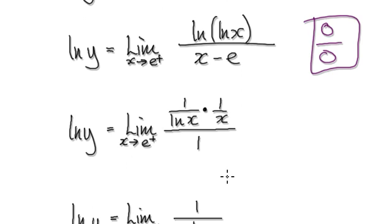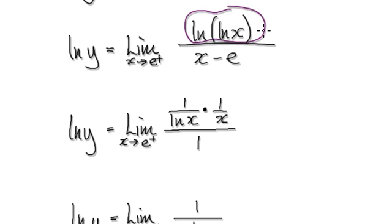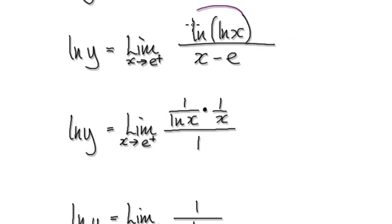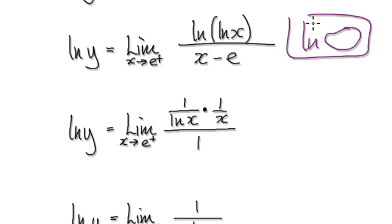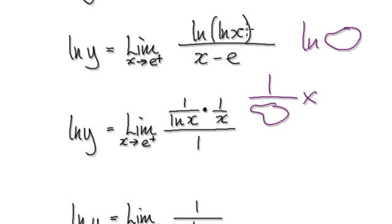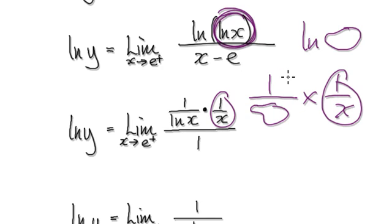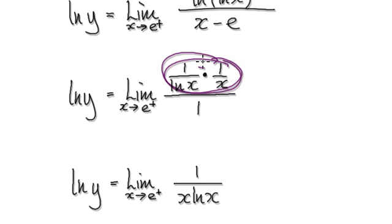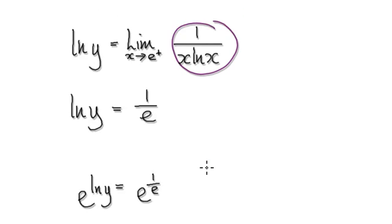Applying L'Hôpital's rule — differentiate the top: if you differentiate this it gives you this, and the derivative of the bottom is just one. To differentiate the top, visualize it as one over the bubble times the derivative of the bubble. The derivative of the bubble is one over x, giving you this. Then multiplying them together, this thing divided by one gives you this simplified expression.